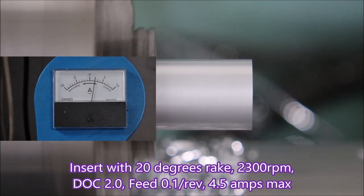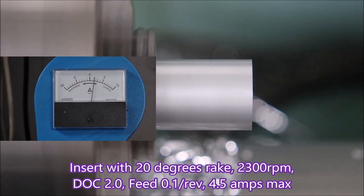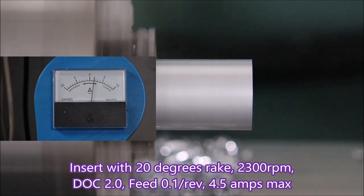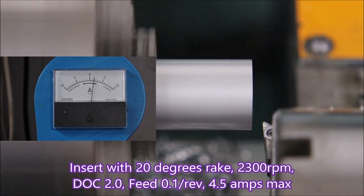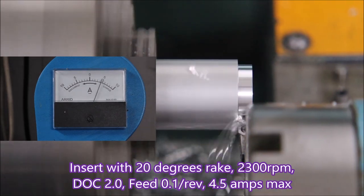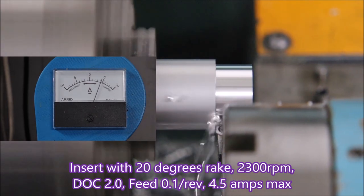That will sort that out. This is an aluminum insert, 20 degrees of rake. Depth of cut is two, feed is 0.1 per rev, and you can see it's only drawing four and a half amps.